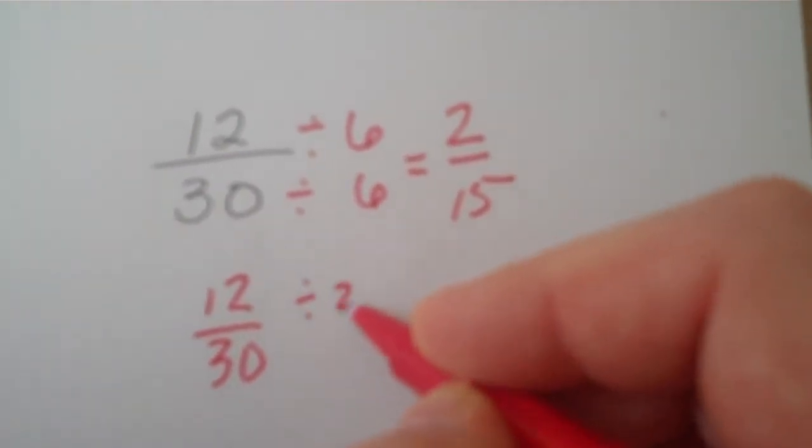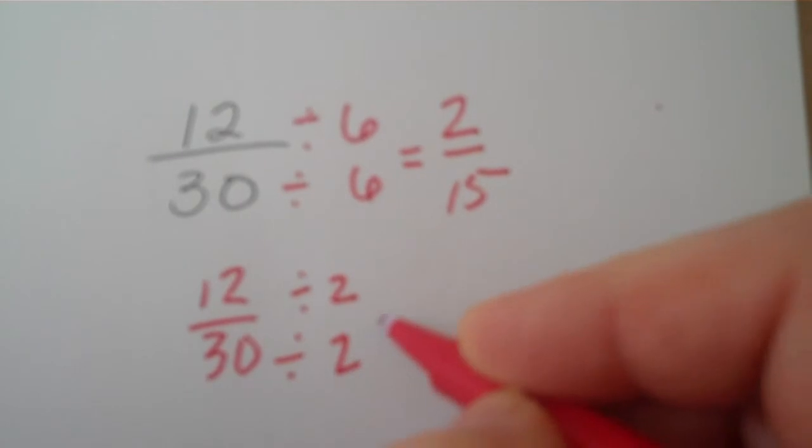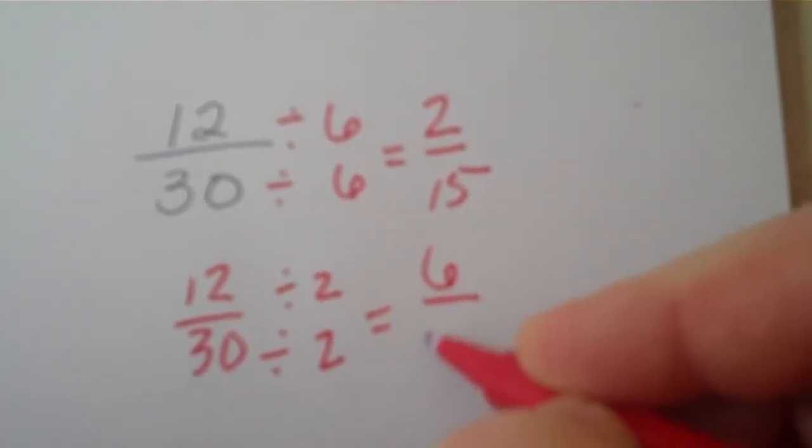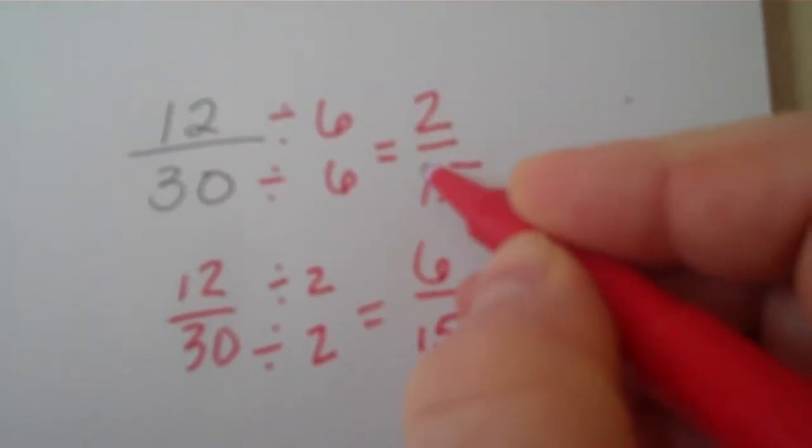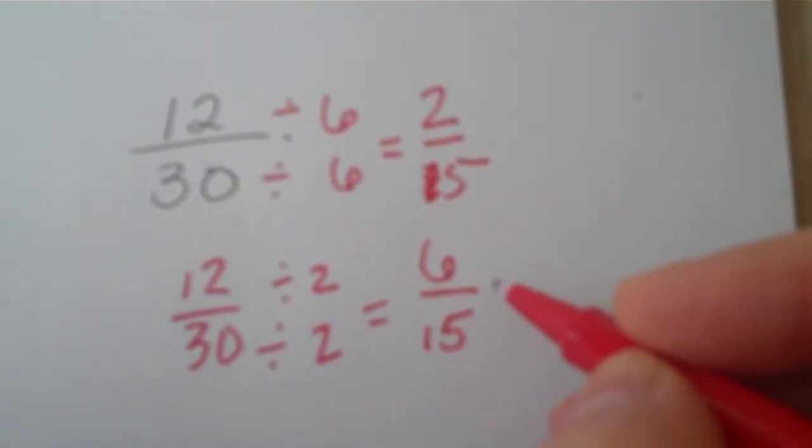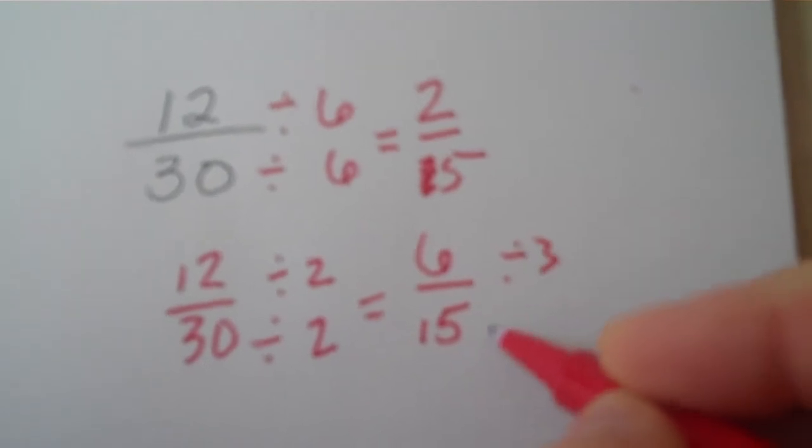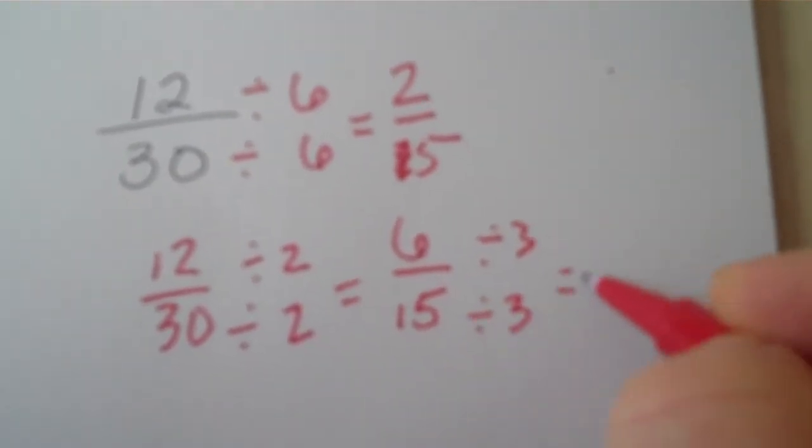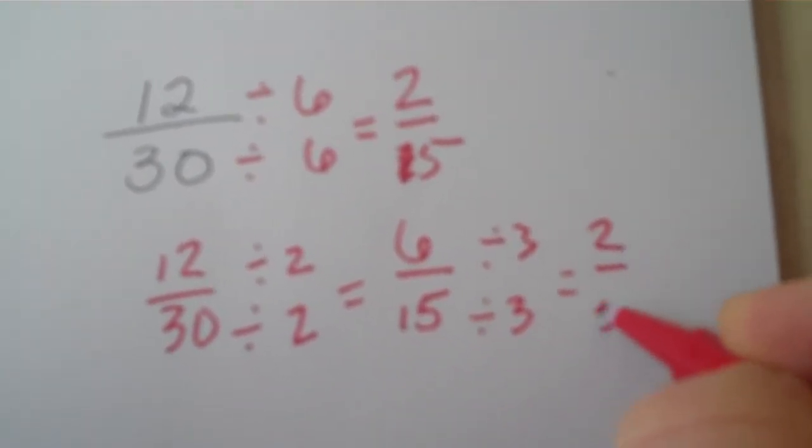You might have started by dividing by 2, which would give you 6 fifteenths. I can see both 6 and 15 can be divided by 3, so I'm not done. And I get 2 fifths.